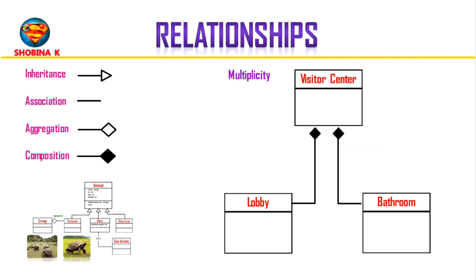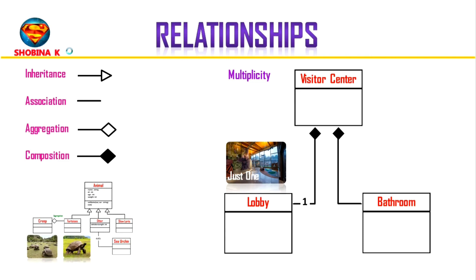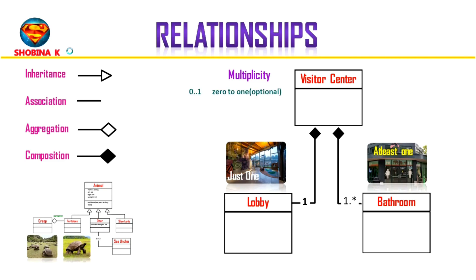Another important concept in UML class diagrams is multiplicity. Multiplicity allows you to set numerical constraints on your relationship. For example, if we want to specify that our visitor center is going to have just one lobby, we write the number 1, meaning there can be only one lobby per visitor center. For bathrooms, if we want at least one bathroom per visitor center, we use a notation to denote one or many. Other types of multiplicity are 0 to 1 for an optional relationship, a specific number n, 0 to many, or 1 to many or a specific number range.